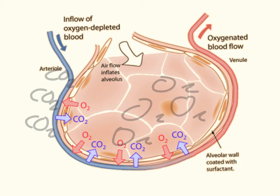And it will then move into the blood via a process that we call diffusion. Diffusion is simply the movement of substances from where there's a lot of them, where they're at a high concentration, to an area where they're at a lower concentration. So for oxygen, it will move from the alveoli where there's a lot of it into the blood where there's less.